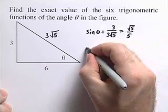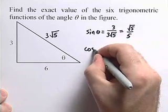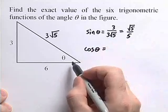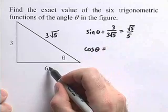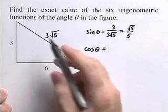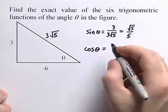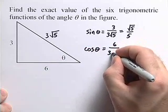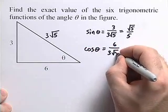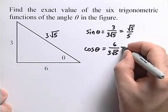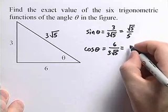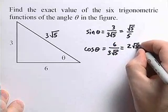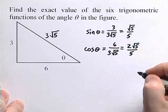For cosine theta, the cosine of an angle is the adjacent side over the hypotenuse, so we'll get 6 divided by 3 times the square root of 5. If we clean that up, we'll get 2 times the square root of 5 divided by 5.